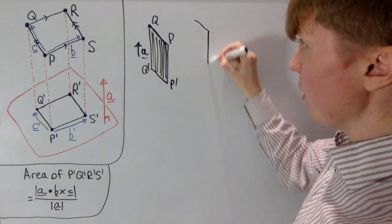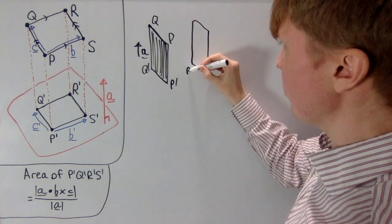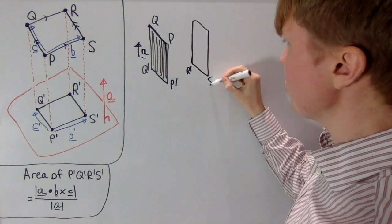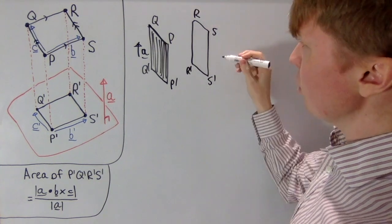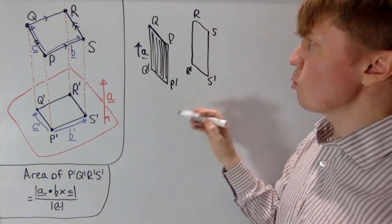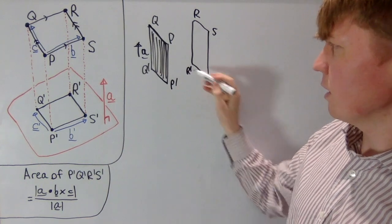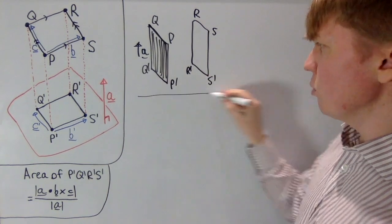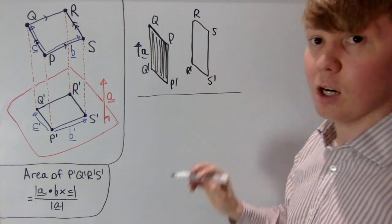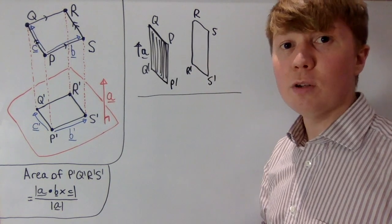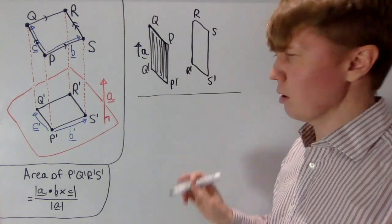Similarly, r, s, r prime, and s prime also all lie on a single plane. This is going to be really useful now, because we want to show that p prime q prime is parallel to r prime s prime. We'll do this by showing that both p prime q prime and s prime r prime are orthogonal to two distinct pairs of vectors.